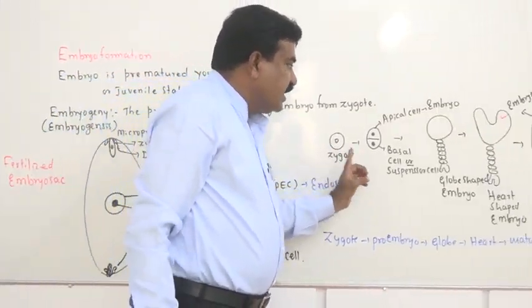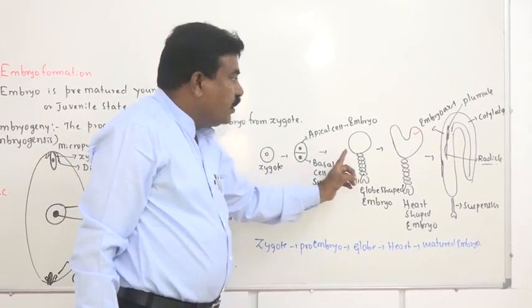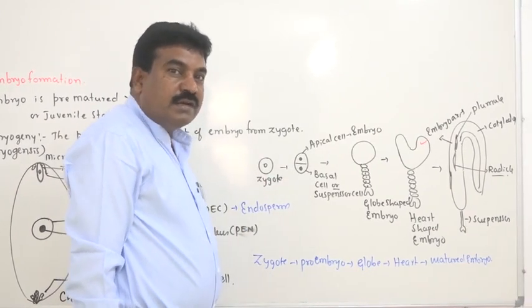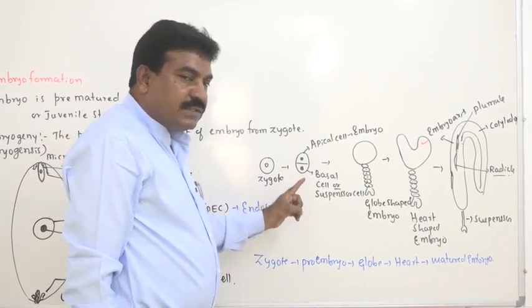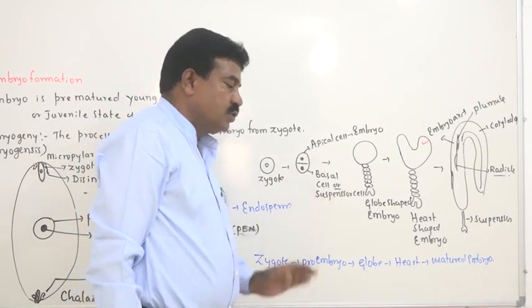Another important exam question is: sketch and label the steps of embryonic development or embryogenesis, and explain; or sketch and label embryonic development in case of dicotyledon. In the previous discussion we explained how embryogenesis takes place — how the zygote develops into a matured embryo. The basic principle of embryogenesis is the same for both monocotyledon and dicotyledon.